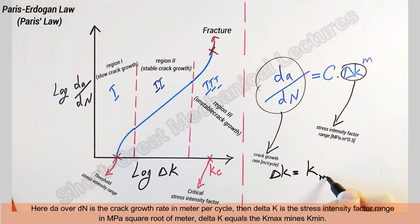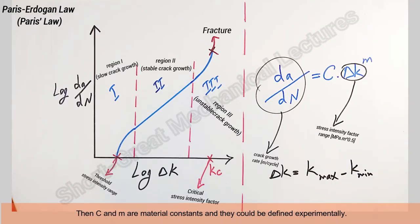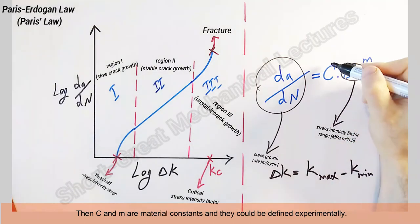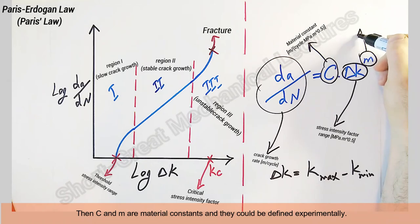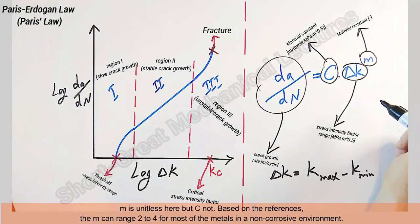Then C and m are material constants and they could be defined experimentally. m is unitless here, but C is not. Based on the references, the m can range from two to four for most of the metals in a non-corrosive environment.